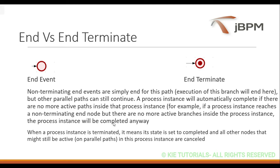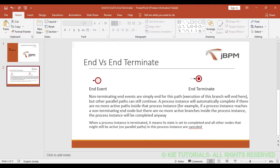In a terminate event, when a process instance is terminated its state is set to completed and all other nodes that might still be active in that process instance are cancelled. In simple words, if you are using a non-terminating end event, only the incoming path to that event will be ended and other active nodes remain active. Whereas in the terminate end event, if it reaches one particular end event and other active instances are present, those are cancelled and the process instance is permanently ended.